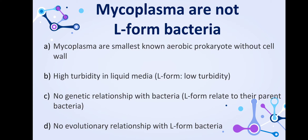Mycoplasmas are the smallest known aerobic prokaryotes without a cell wall, but they are not L-form bacteria. Key differences include: mycoplasmas show high turbidity in liquid media, whereas L-forms show low turbidity. There is no genetic relationship between mycoplasma and other bacteria, whereas L-forms are genetically related to their parent bacteria. There is also no evolutionary relationship between L-form bacteria and mycoplasma.